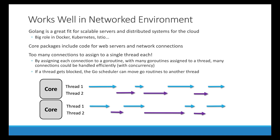Golang is a great fit for scalable servers and distributed systems for the cloud, as seen with Docker and Kubernetes, which are created in Golang. The core packages include code for web servers and network connections, which makes sense because the three developers were working in a heavily networked environment. One issue is that we're going to get many more requests than we have threads to assign them to. So to fix this we assign many goroutines to a single thread, allowing us to handle many requests at the same time using concurrency. If a thread gets blocked, the Go scheduler can move goroutines to another thread automatically.